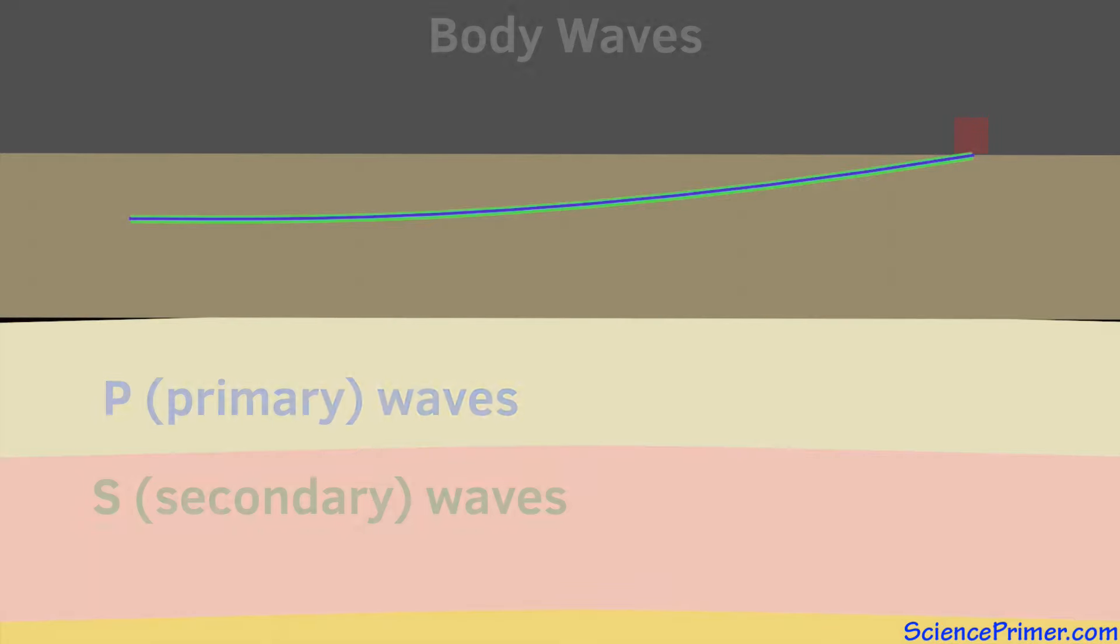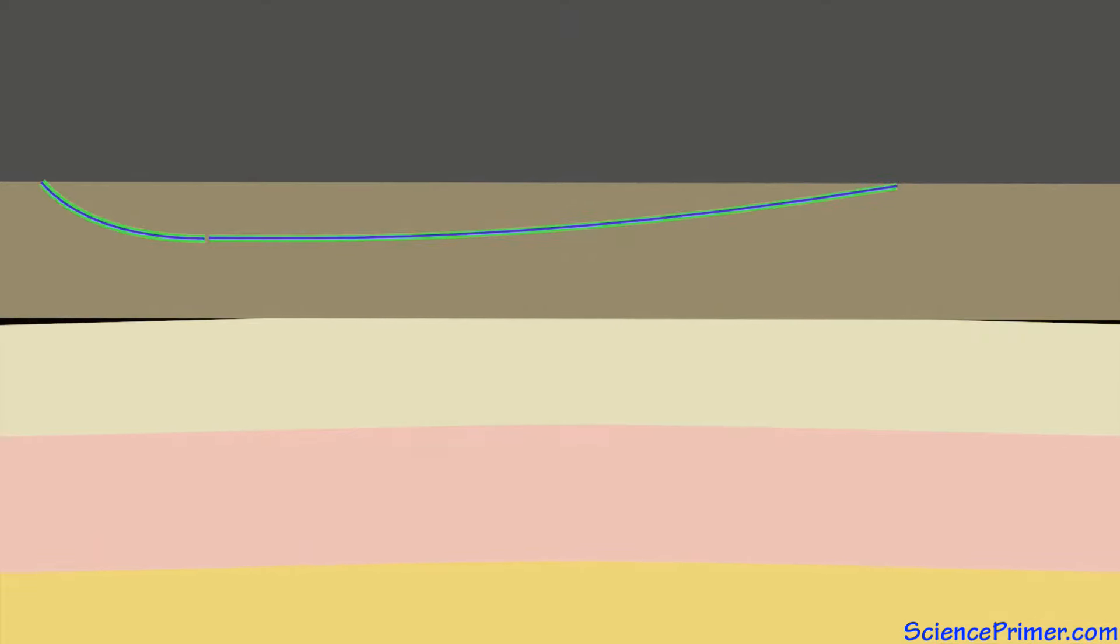Differences in the arrival time of S and P waves at different locations around the world is one way seismologists use these waves to determine the location or epicenter of earthquakes deep underground.